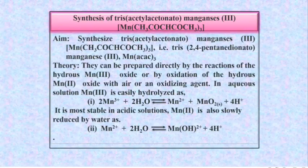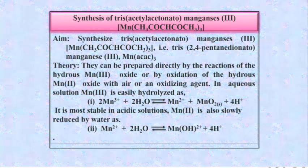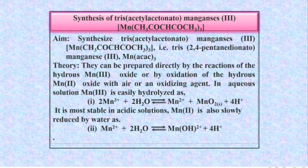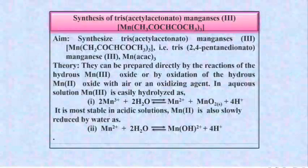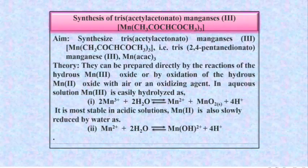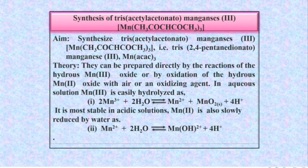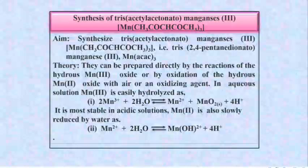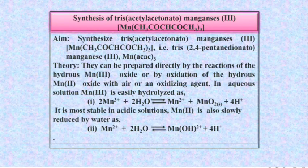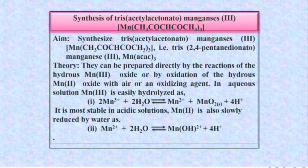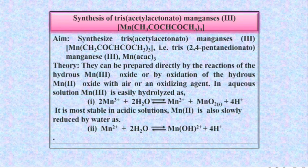They can be prepared directly by the reaction of hydrous Mn(III) oxide, or by oxidation of hydrous Mn(II) oxide with air or an oxidizing agent. In aqueous solution, Mn(III) is easily hydrolyzed: 2 Mn³⁺ + H₂O gives MnO₂ + Mn²⁺ + 4 H⁺.